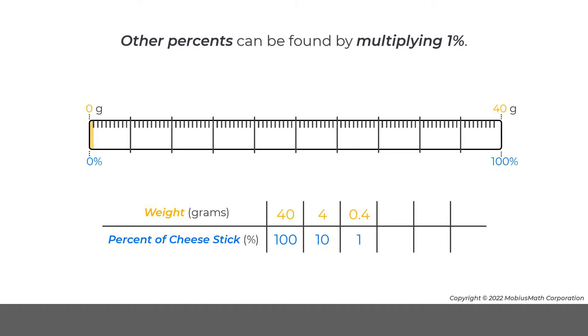Other percents can be found by multiplying 1%. For example, 39% of 40 grams can be found using a ratio table where 100%, 10%, and 1% of 40 grams are listed.